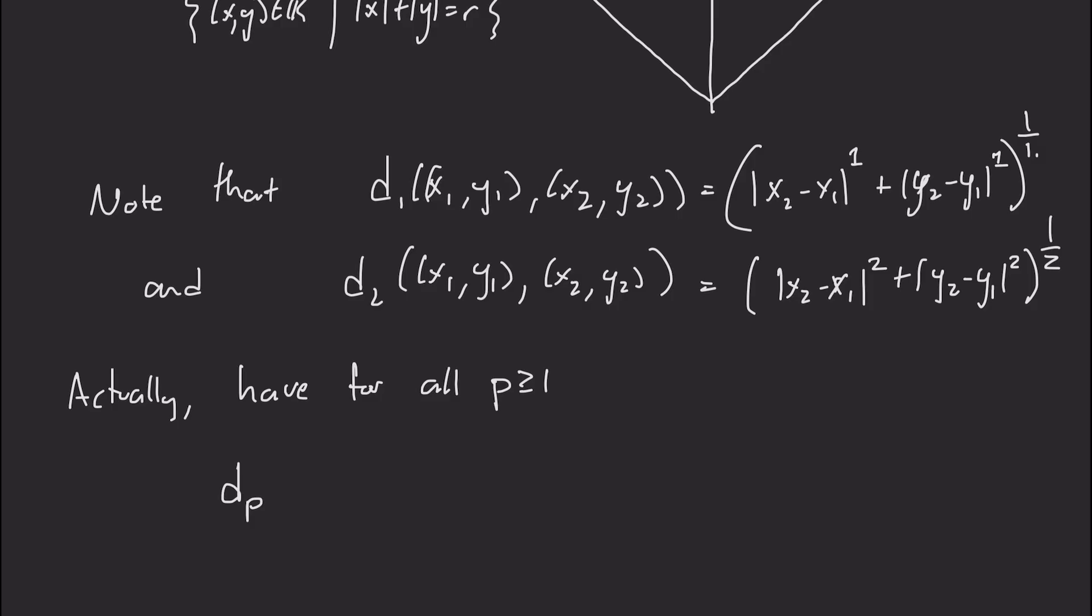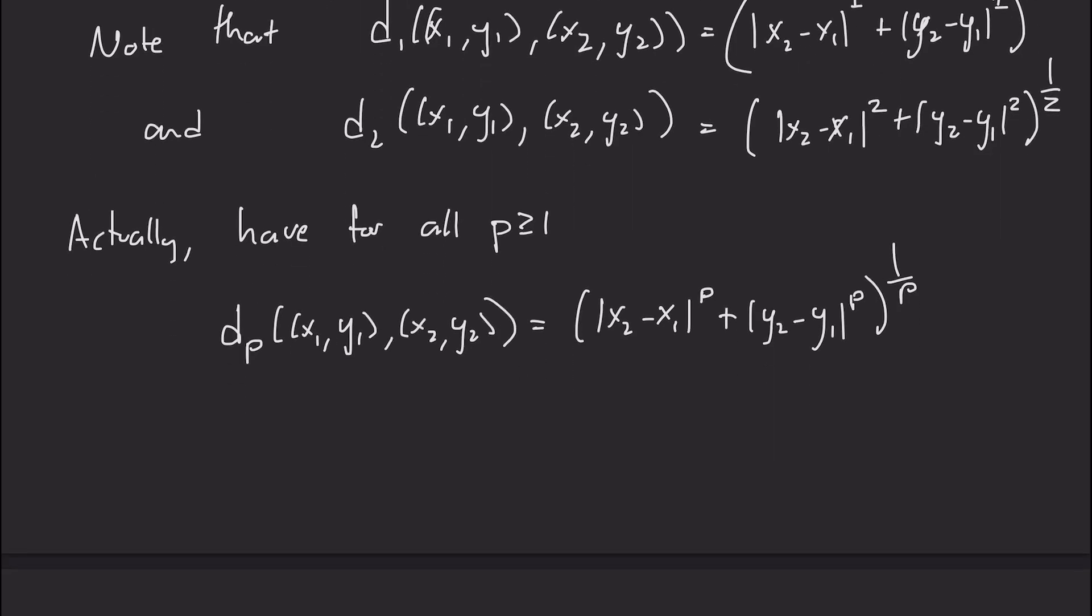And in fact, we do have a distance, a dp, that I just change that exponent. Instead of 1 and 2, I have p instead. So the d sub p between two points, x1, y1, and x2, y2, is the sum of the absolute values of x2 minus x1 to the power p, plus y2 minus y1, an absolute value to the power p. And all of that to the power of 1 over p. So we're taking the pth root of that sum.